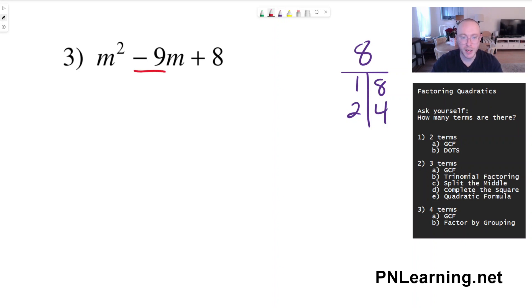But we're trying to make them add up to a negative number. One and eight add up to nine. If we want to make them add up to negative nine, we can simply make them both negative.